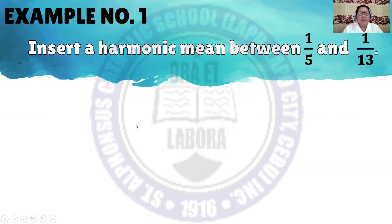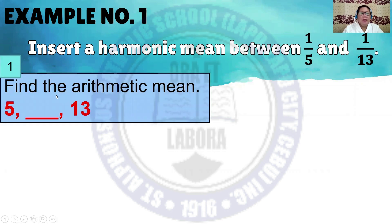Let us have an example. Insert a harmonic mean between 1/5 and 1/13. First, you have to find the arithmetic mean of the denominators of 1/5 and 1/13.